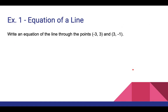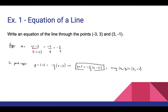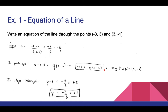Example one: equation of a line. Write an equation of a line through the points negative 3, 3 and 3, negative 1. First we calculate the slope: m equals negative 1 minus 3 over 3 minus negative 3, which equals negative 4 over 6, giving us a slope of negative 2 thirds. In point-slope form, choosing the point 3, negative 1, we get y minus negative 1 equals negative 2 thirds times x minus 3, so y plus 1 equals negative 2 thirds times x minus 3. In slope-intercept form, solving for y gives us y equals negative 2 thirds x plus 1.